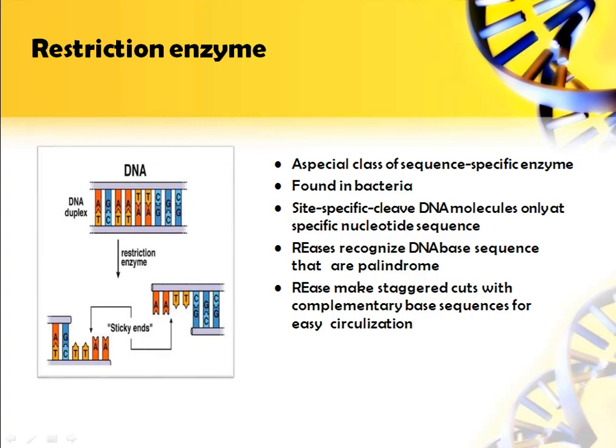Restriction endonucleases recognize DNA base sequences that are palindromes. They make a staggered cut with complementary base sequences for easy circularization. After treating a double-stranded DNA fragment with a restriction enzyme, it forms sticky ends. There are two types of ends: sticky ends, which have single-stranded overhangs, and blunt ends, which cut the DNA fragment at the same place so both strands are of equal length.